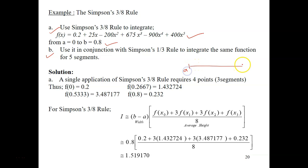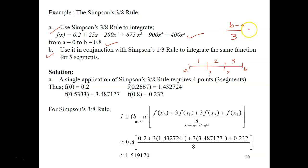You have your limit A here and B here, requiring 4 points — first, second, third, fourth — and 3 segments. The step size is B minus A divided by 3, so 0.8 divided by 3. Each segment has a width of 0.8 over 3. The next point is 0.2667 and the following point is 0.5333. Substitute all these values into the function to work out the function values.